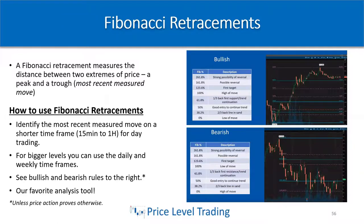Fibonacci retracements are one of my favorite analysis tools to use, and it's what price level trading is known for — how we trade levels. This is how we identify those high probability trading levels. A Fibonacci retracement measures the distance between two extremes of price — a peak and a trough, like a high to a low — and I call that the most recent measured move.